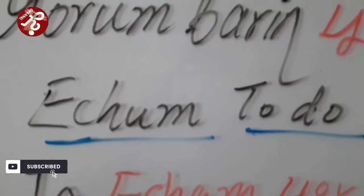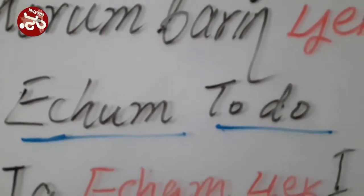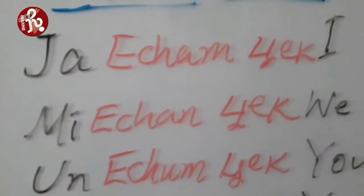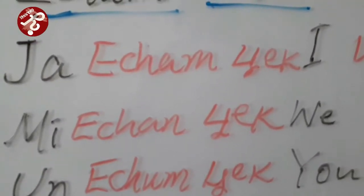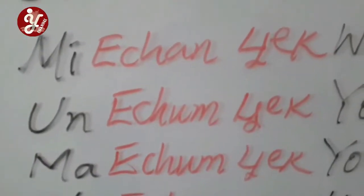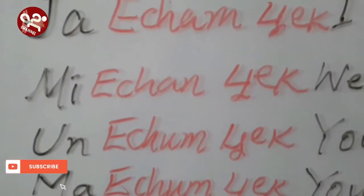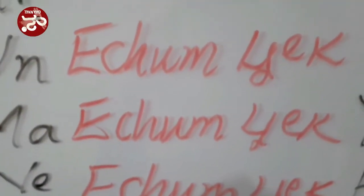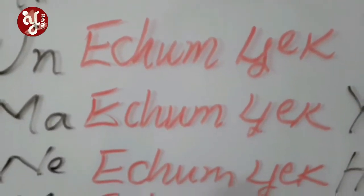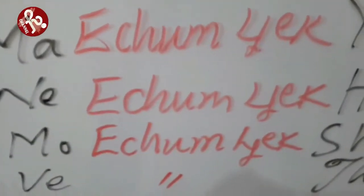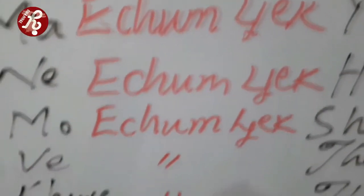Here we will take the verb 'acham,' which means 'to do.' So 'ja acham check' means 'I used to do.' 'Me acham check' means 'we used to do.' 'Un acham check' means 'you used to do' — that is, you plural, more than one person. 'Ne acham check' means 'he used to do.' 'Mo acham check' means 'she used to do.'